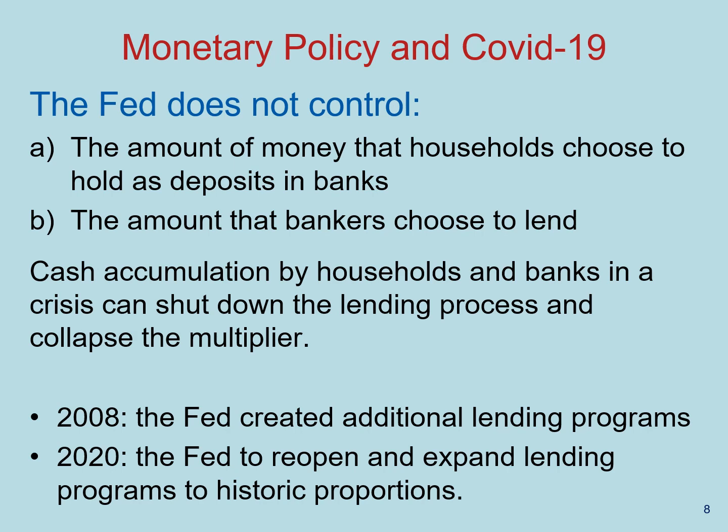Throughout this conversation, there's something important to highlight: even though the Fed can keep the target Fed funds rate on point, the Fed does not control the amount of money that households choose to hold as deposits in banks, or the amount that bankers choose to lend. So in emergencies, when households and banks start stashing cash, it can shut down the lending process and collapse the multiplier. For that reason, the Federal Reserve has many more tools than open market operations. In the great financial crisis of 2008, the Fed created additional lending programs to put cash into the economy directly through financial and non-financial institutions. And in 2020, the Fed reopened and expanded these lending programs to historic proportions.